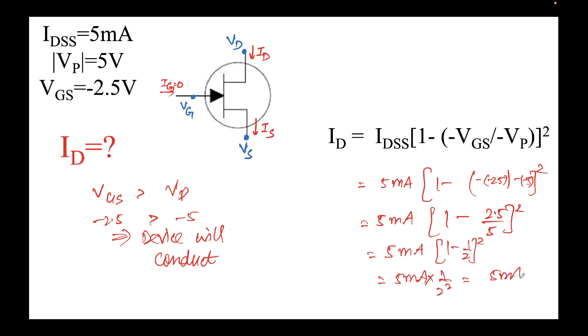That will be 5 milliamps over 4, which is nothing but 1.25 milliamps. We see there is some finite current flowing over here. Note that it is not as high as the IDSS because IDSS is when VGS is equal to 0, and we have VGS as some negative voltage.